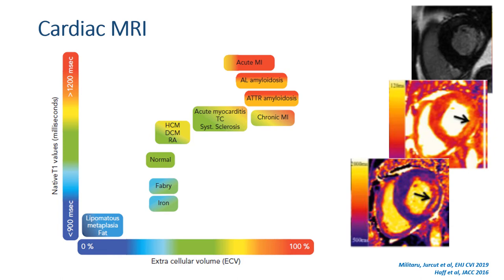Cardiac MRI can bring even further information. The evolution of T1 mapping was essential for studying the structural particularities of the myocardium even without contrast, which is especially important in patients with severe chronic kidney disease. Fabry disease sits at this part of the spectrum with low native T1 values around 1000 milliseconds and low extracellular volume, while another phenocopy — amyloidosis — is at the other end of the spectrum with high native T1 values and high extracellular volume.